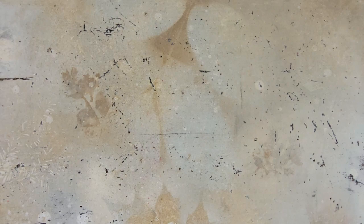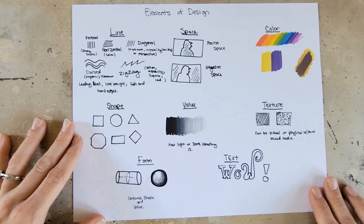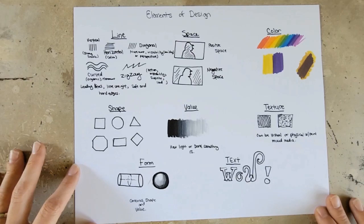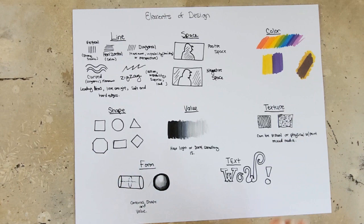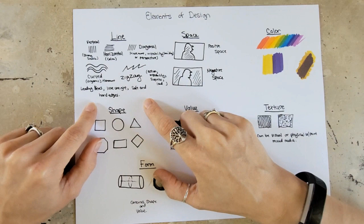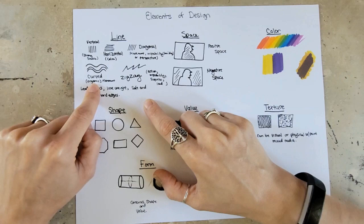Now let's talk about the things we are putting into the composition — the elements of design. There are six main elements of design, plus a couple of others I'd like to discuss — these are the basics. The first element that most of us deal with, even from childhood, is line. You have vertical lines, horizontal lines, diagonal lines, curved lines, zigzags, broken lines, and so on. Vertical lines usually indicate something stable and strong, horizontal lines give more of a calming effect, diagonal lines create a feeling of movement or instability.